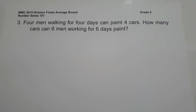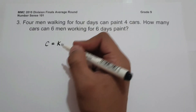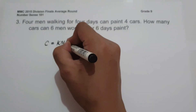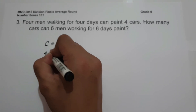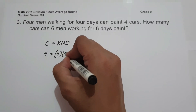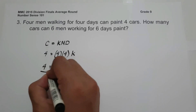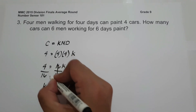On number 3, 4 men working for 4 days can paint 4 cars. How many cars can 6 men working for 6 days paint? Always remember, the number of cars is directly proportional to the number of men and to the number of days. The first thing we do is find the constant of variation K. Using the formula C equals K times men times days: 4 cars equals K times 4 men times 4 days, so 4 equals 16K. Dividing both sides by 16, the constant K is 4 over 16, or 1 fourth.